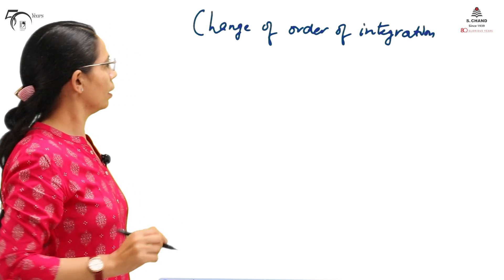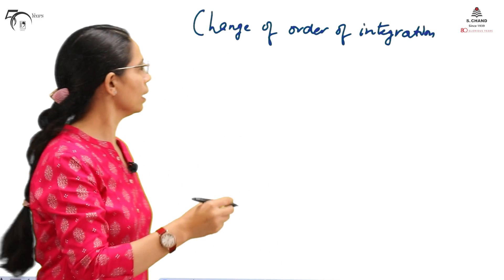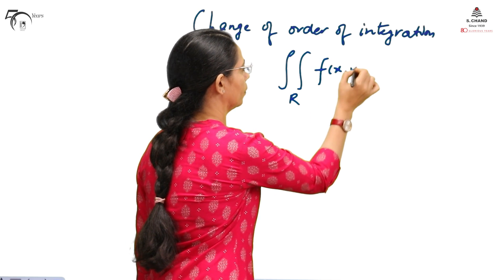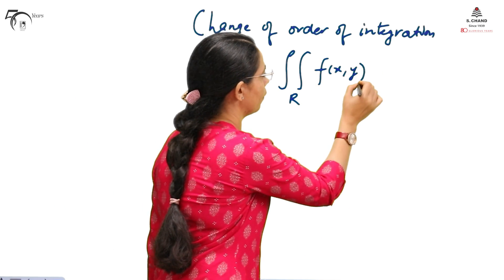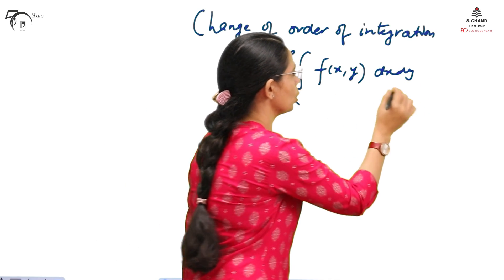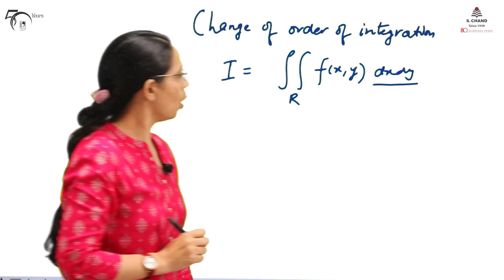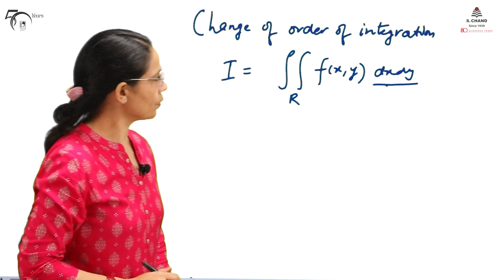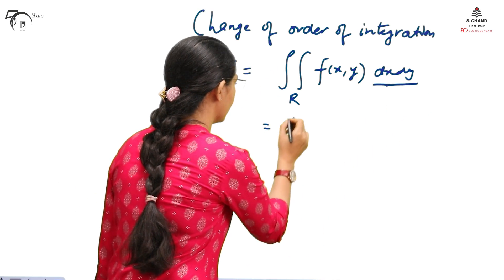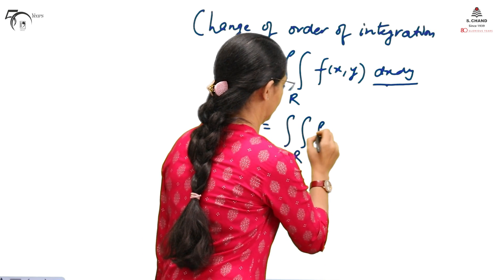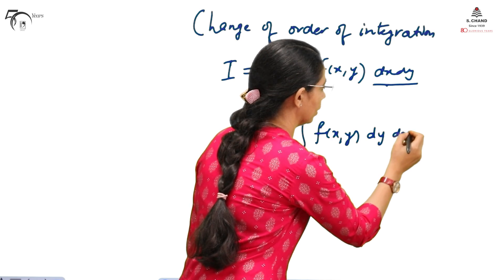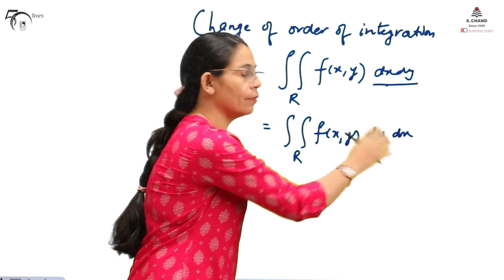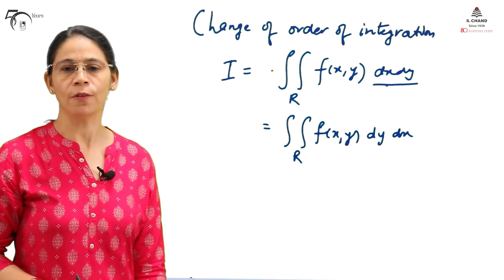Let us understand what we mean by change of order of integration. Suppose we need to integrate f(x,y) over a region of integration r, where the variables tell us the order of integration. According to the standard notation, we need to integrate f(x,y) with respect to y first and then with respect to x. This procedure is called the change of order of integration.